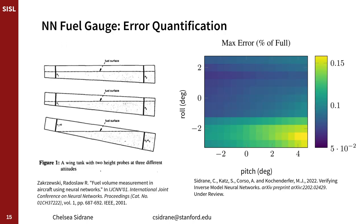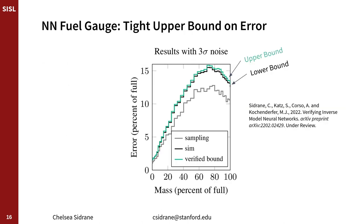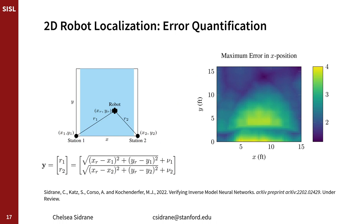And this is what the results look like. On the right, we have a plot of maximum error in fuel measurement as a function of roll and pitch of the aircraft, and you can see in the bottom right there's high error — we might need more training data from that area of the state space. We also have another plot which shows that the network isn't doing great at about 15% error, but our upper bound on error from optimization is pretty tight to the lower bound, which is our job: to tell you whether or not the network is performing well. We also demonstrated our approach on a 2D robot localization problem. We have a robot trying to estimate its xy location using two range measurements, and we can see that the network is doing worse in the yellow region towards the bottom center.